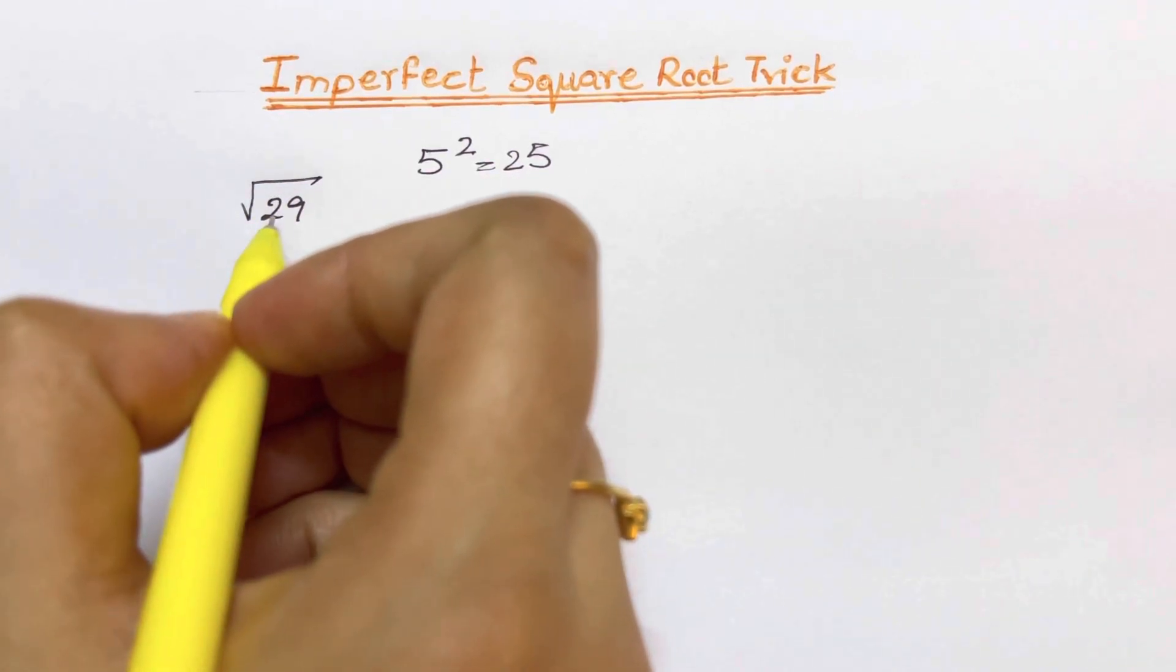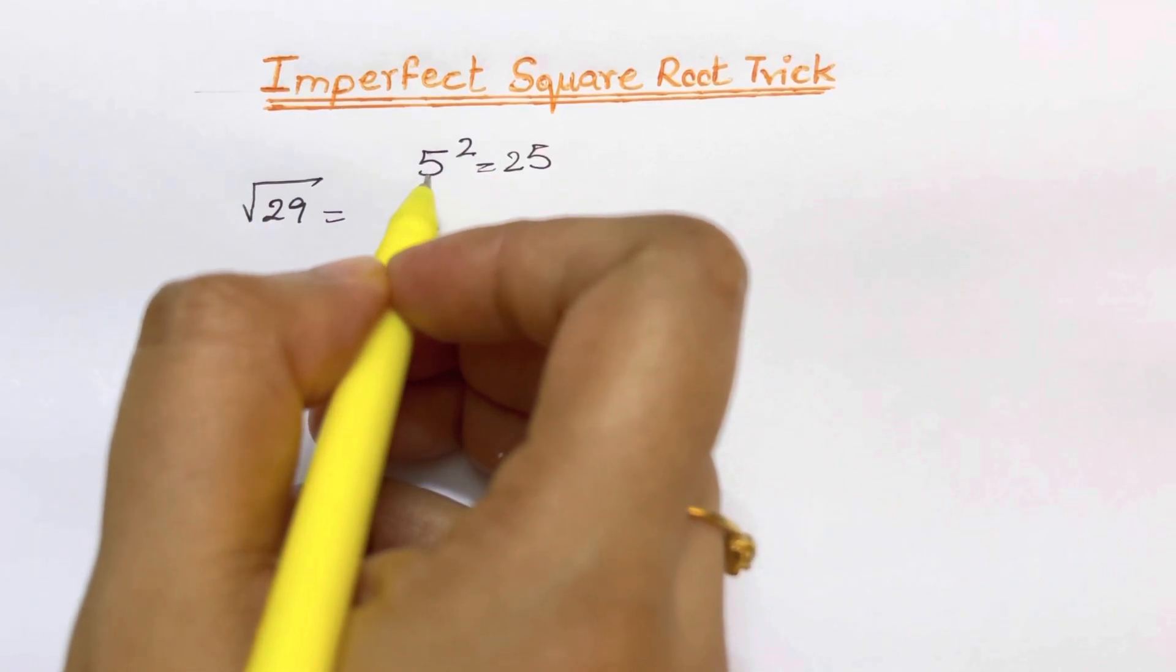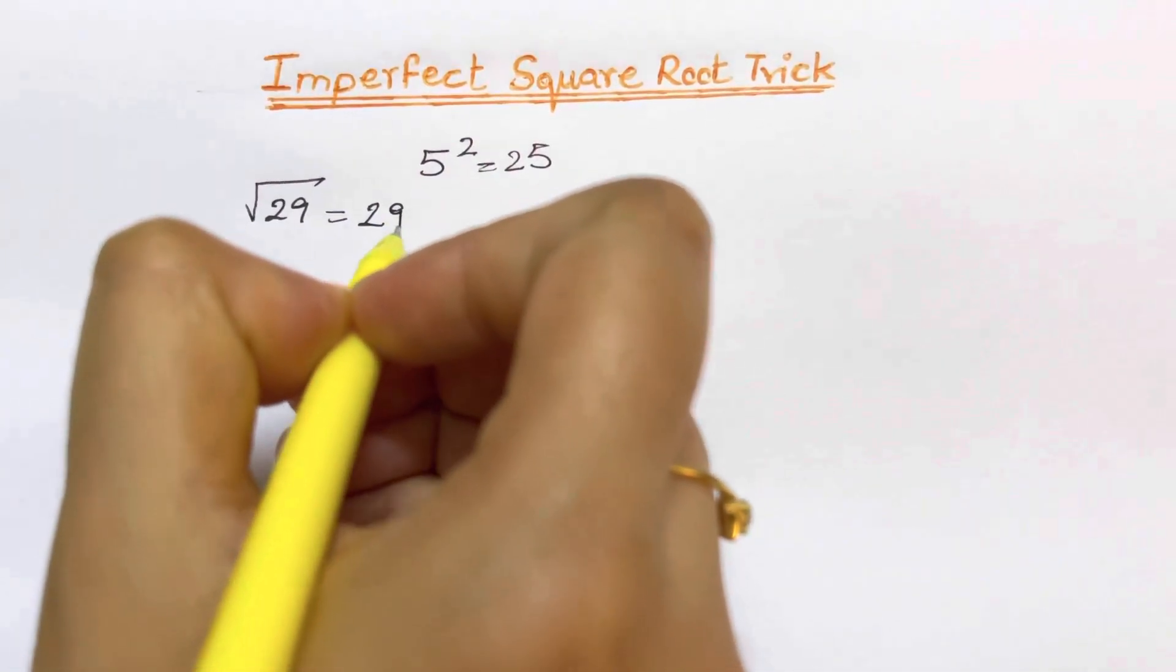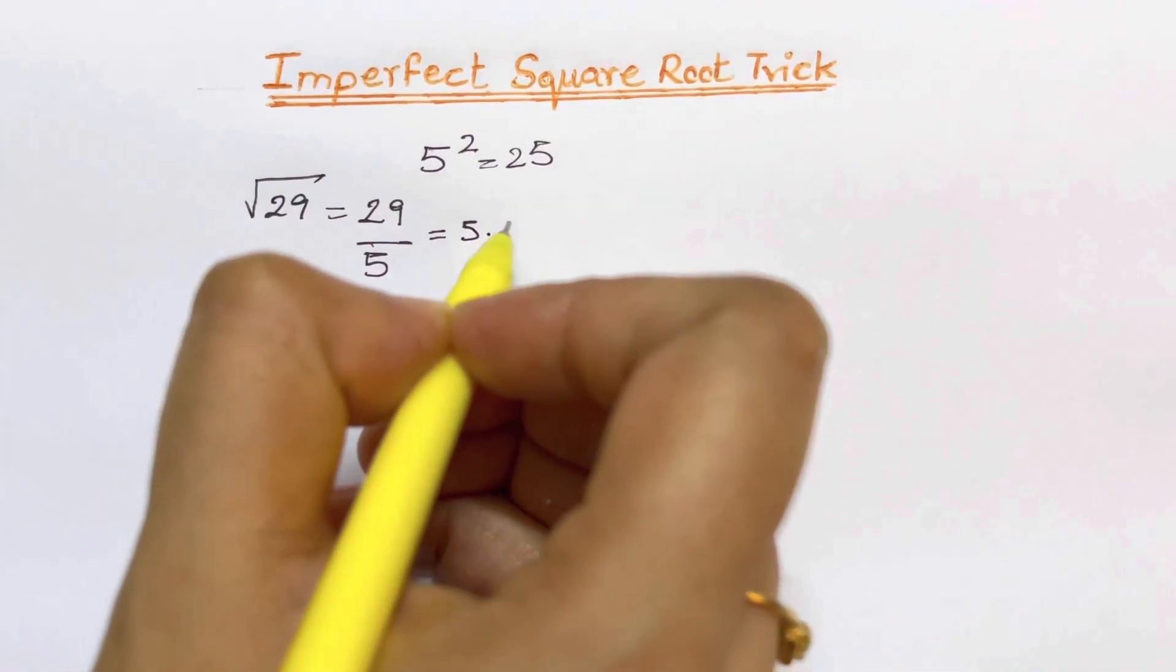Now what we're going to do is, since 25 is nearest to 29, we are going to divide 29 by this 5. The first step is dividing 29 by 5, and so we get 5.8.